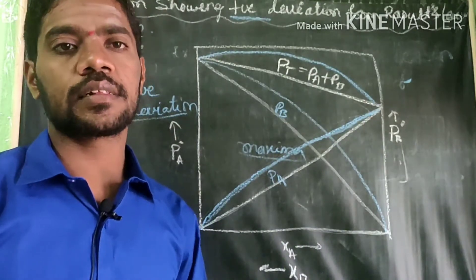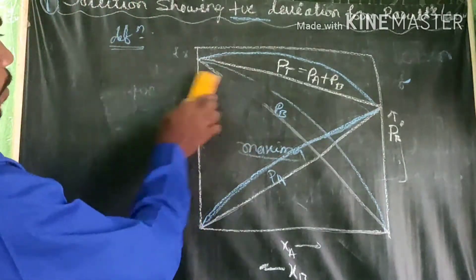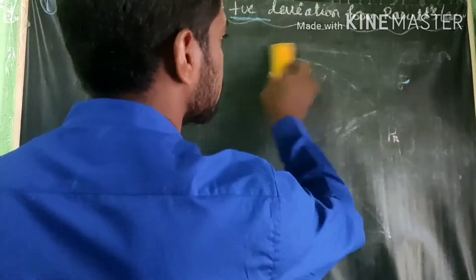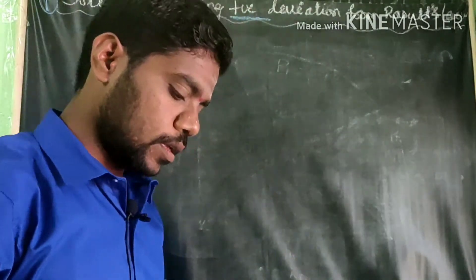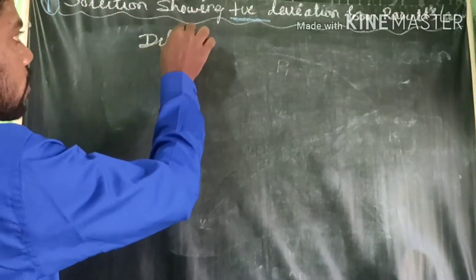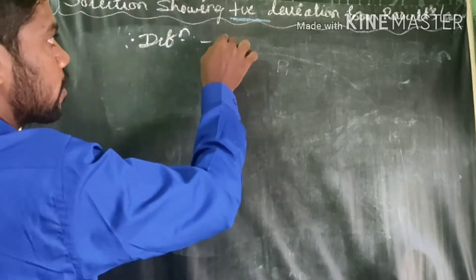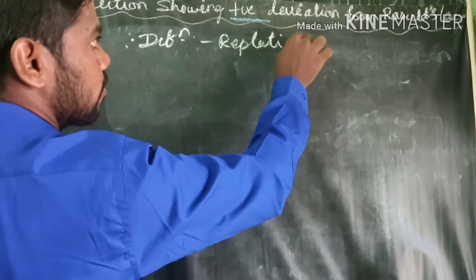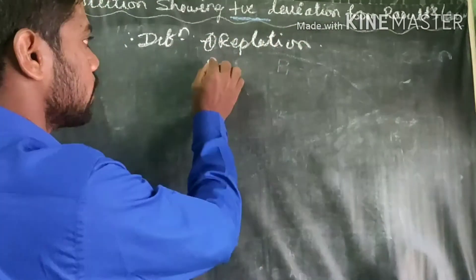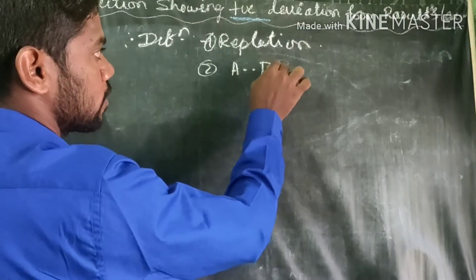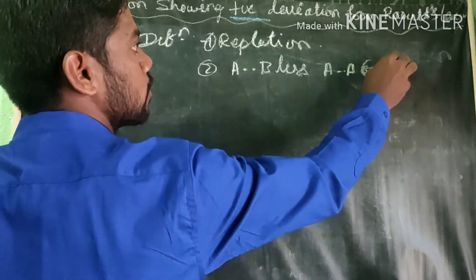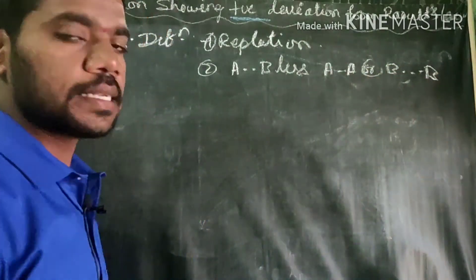What are the characteristics of positive deviation from Raoult's law? The first characteristic — which is also the definition — is that molecular repulsion is present between the solute and solvent. The second characteristic is that the AB interaction is less than that of the pure compound of type AA or BB.